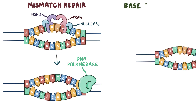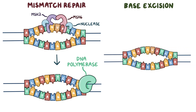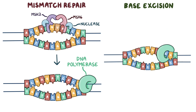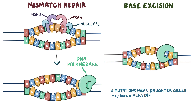The other option is base excision repair, where the enzyme uracil DNA glycosylase removes the uracil base from the uridine, and typically in the next round of DNA replication, a random nucleotide is inserted into the opposite DNA strand by DNA polymerase — once again leading to a mutation. These random mutations mean the daughter cells of the initial B cell may have a very different antigen specificity than their mother cell.